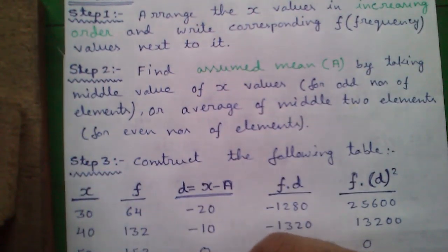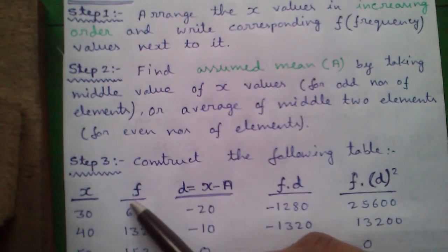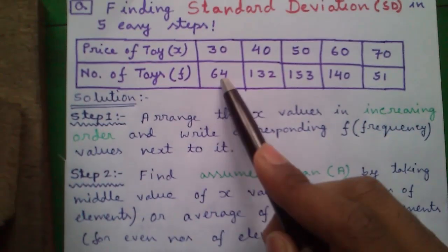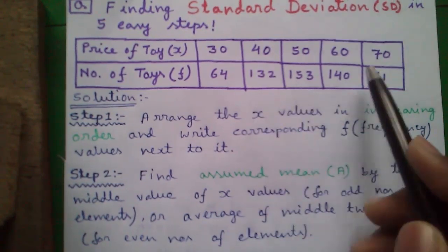Write all X values column wise and write corresponding F value next to it. Corresponding F value for 30 is 64, corresponding F value for 40 is 132 and so on.